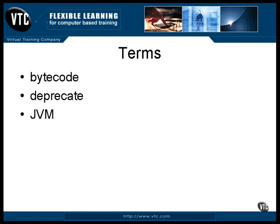The JVM is the Java virtual machine — it's the program that loads and executes Java class files. Several methods of the same name can be included in the same class definition, as long as they all have a different set of argument types defined for them. The method name is then said to be overloaded.